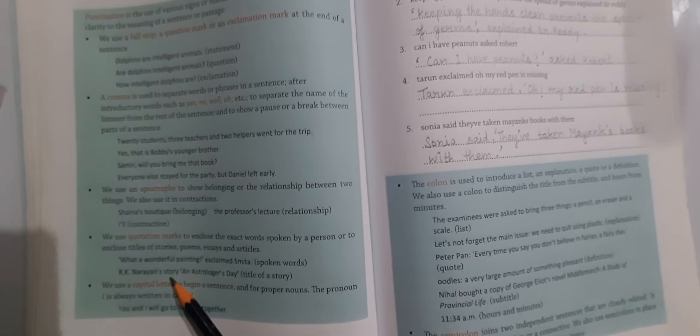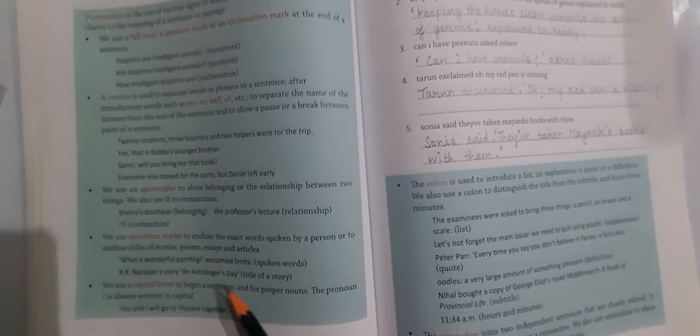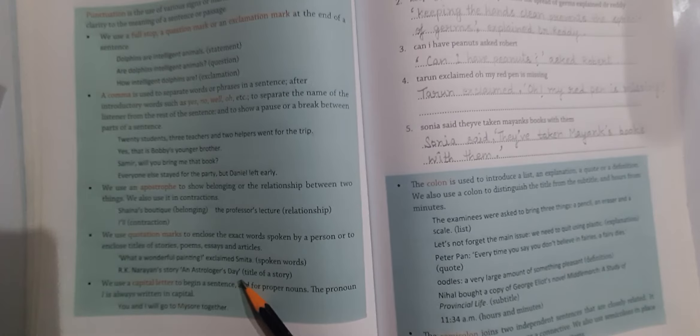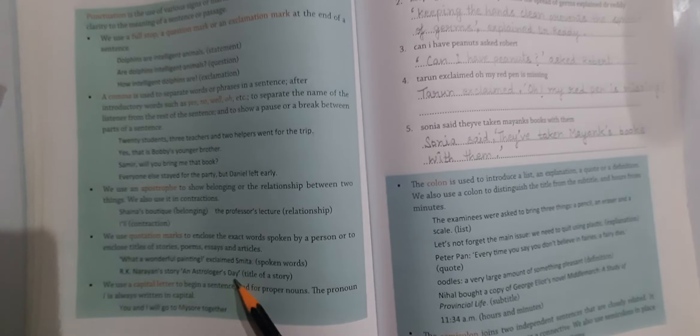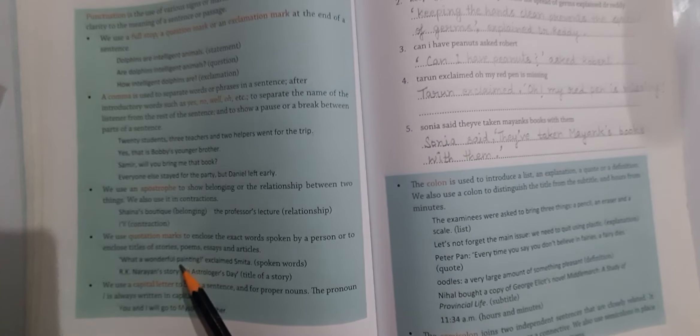R.K. Narayan's story "An Astrologer's Day" - this is the title of a story, so we use quotation marks. Notice the comma here and the quotation marks.